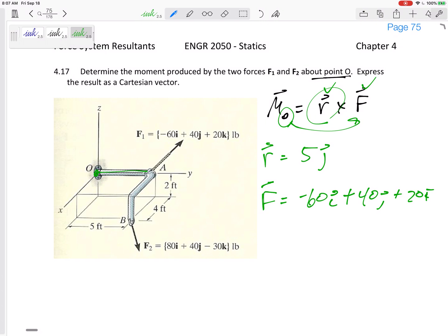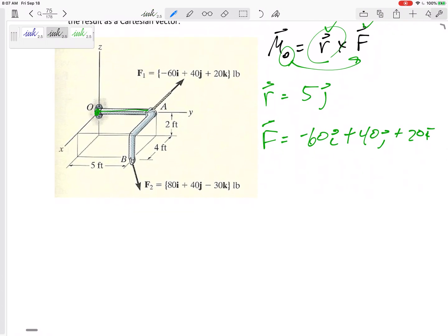Alright, then when I've got both of those, then I'm ready to do my 3 by 3 determinant, my cross product. So this moment caused by this one is going to be i, j, k, 0, 5, 0.